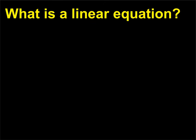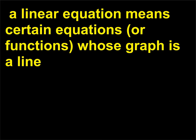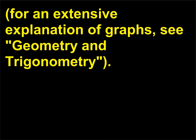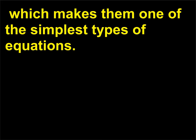What is a linear equation? As the term suggests, linear equations have to do with lines, and in algebra, a linear equation means certain equations or functions whose graph is a line. More specifically, in algebra, a linear equation is one that contains simply the variable, which makes them one of the simplest types of equations. For example, a linear equation in one variable has one unknown — the variable — represented by a letter.